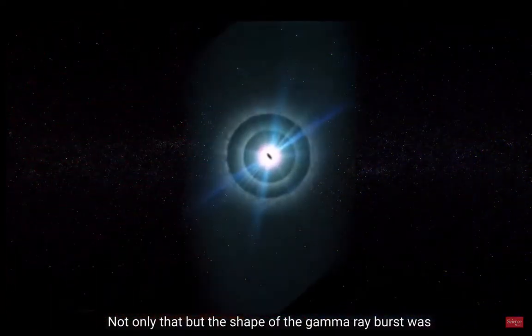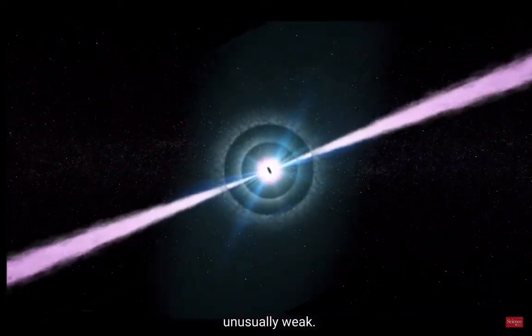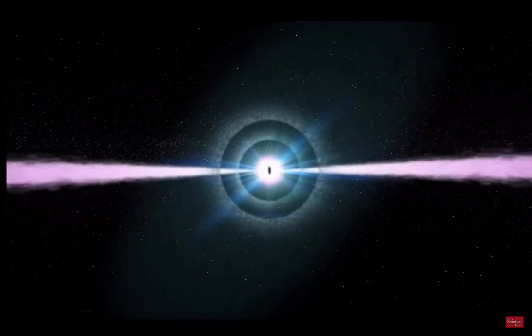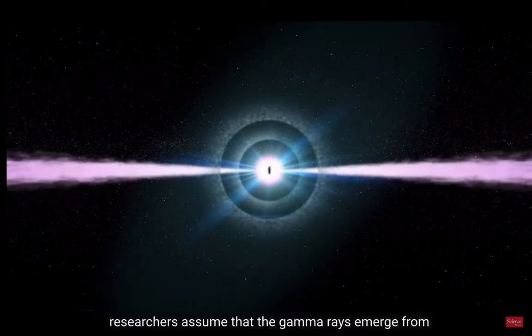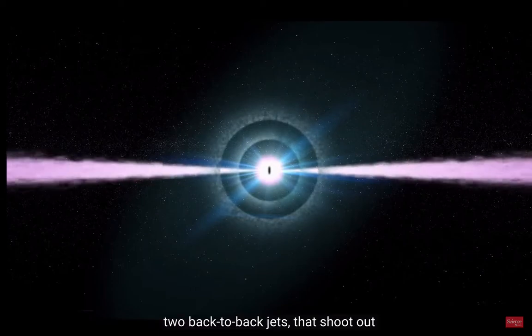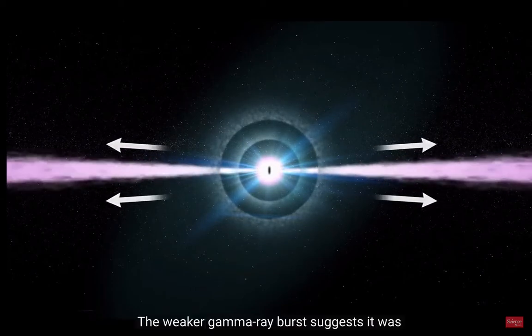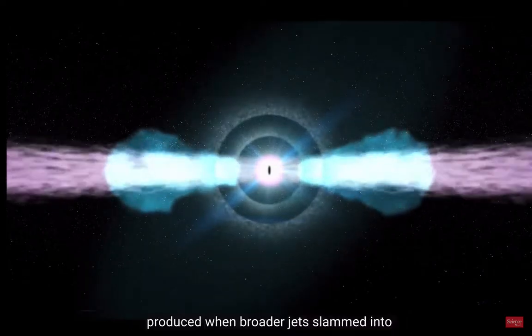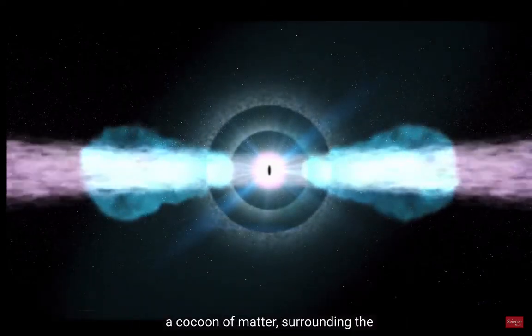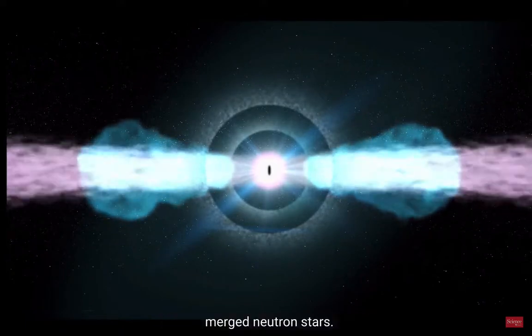Not only that, but the shape of the gamma ray burst was unusually weak. Gamma ray bursts are usually so strong that researchers assume that the gamma rays emerge from two back-to-back jets that shoot out of an explosion like narrow spotlights. The weaker gamma ray burst suggests it was produced when broader jets slammed into a cocoon of matter surrounding the merged neutron stars.